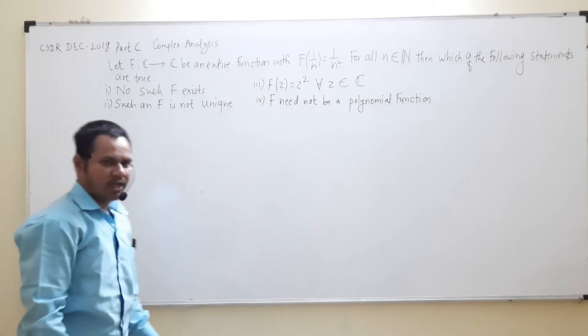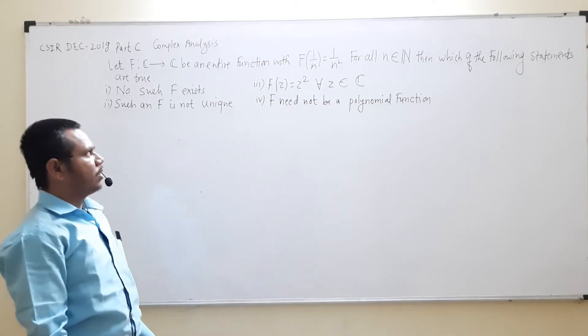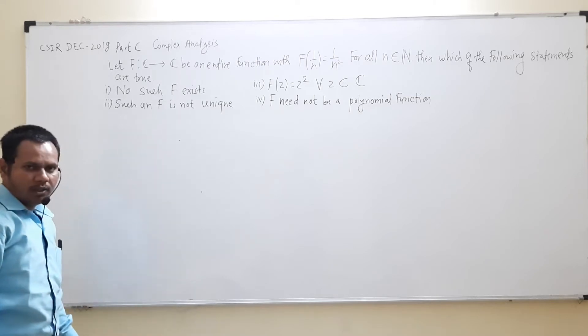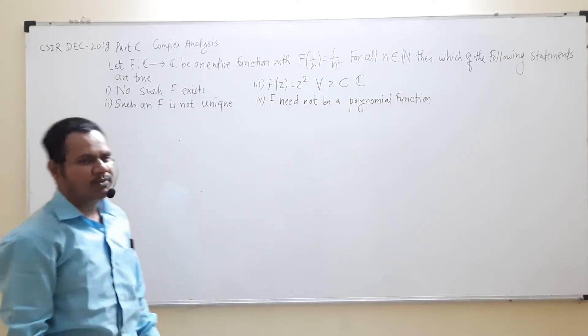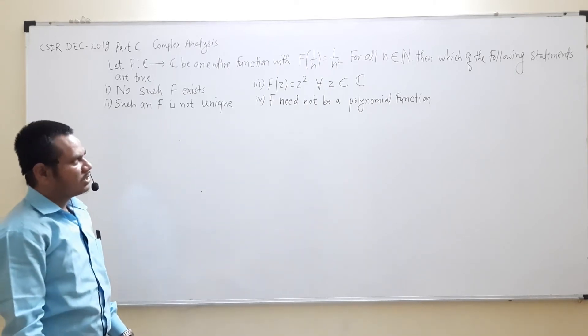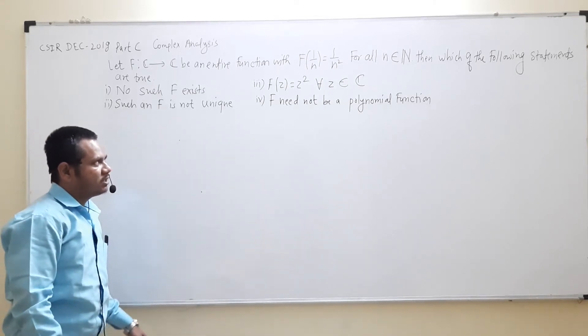First option is: no such function f exists. Second option: such an f is not unique. Third option is: f(z) equal to z² for all z belongs to C. And the fourth option is: f need not be a polynomial function. Now we will solve this problem.